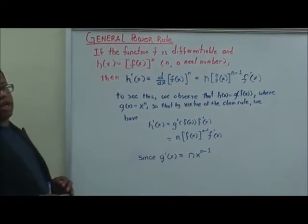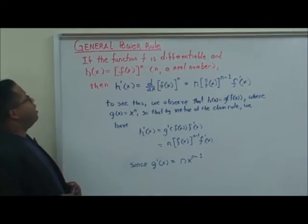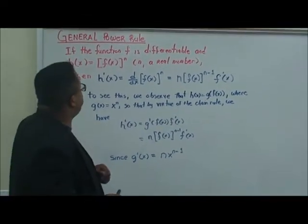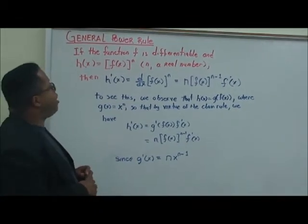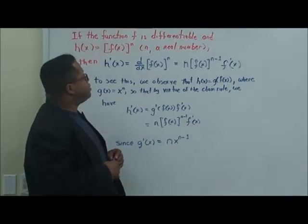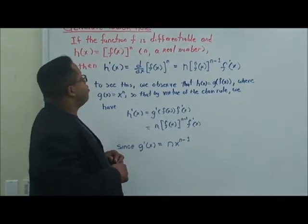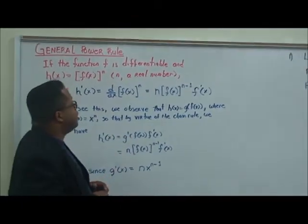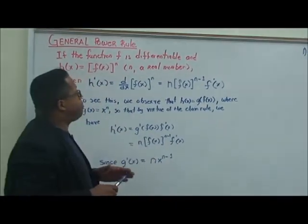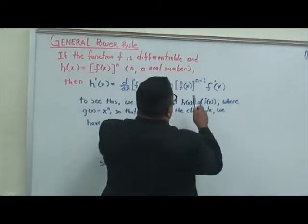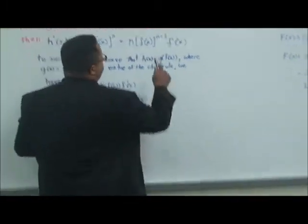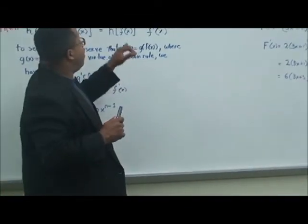We're going to be talking about the general power rule. The general power rule states that if f is differentiable and h of x is equal to f of x raised to the n power, where n is a real number, then h prime of x equals the derivative with respect to x of f of x raised to n. You take the derivative of the outside function with the inside function standing fast, and then multiply by the derivative of the inside function.